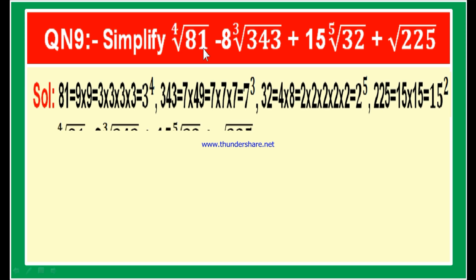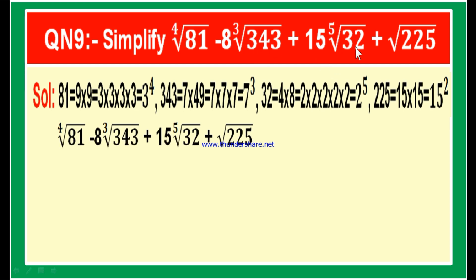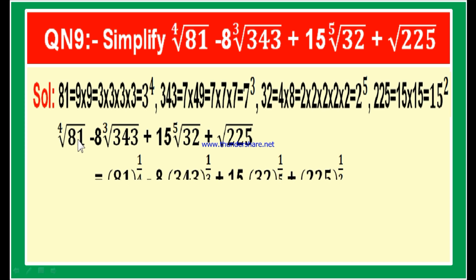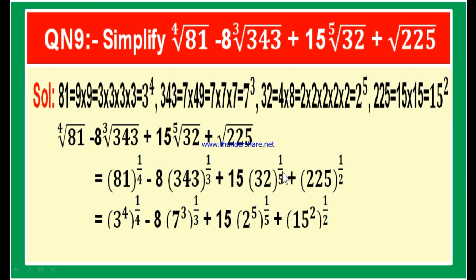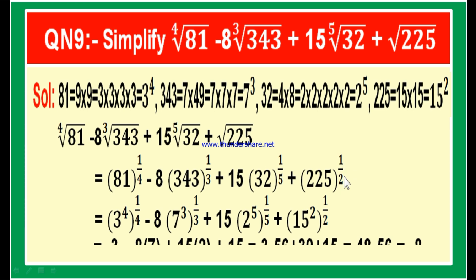Now let us write down the question and substitute these values. The question is: 4th root of 81 minus 8 into cube root of 343 plus 15 into 5th root of 32 plus square root of 225. Substituting: 81 to the power 1 by 4, minus 8 into 343 to the power 1 by 3, plus 15 into 32 to the power 1 by 5, plus 225 whole power 1 by 2.